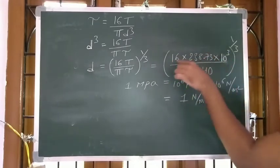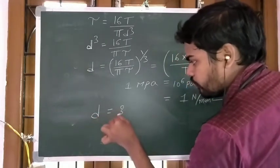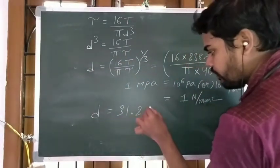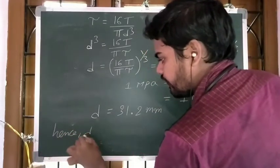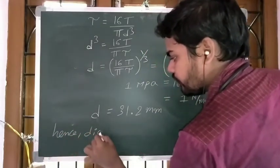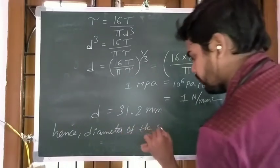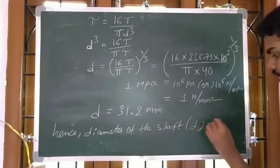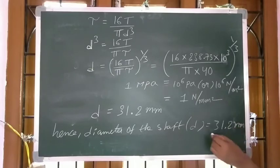Upon solving this expression, the diameter D is equal to 31.2 mm. Hence, diameter of the shaft D equals 31.2 mm.